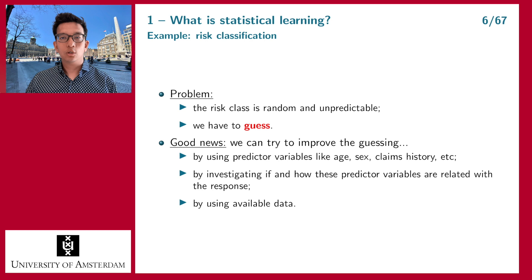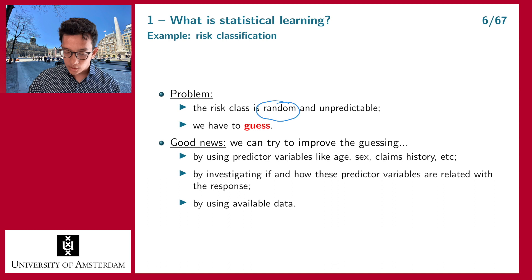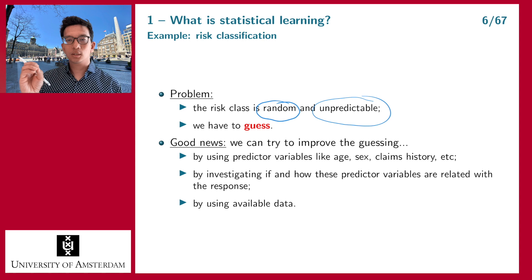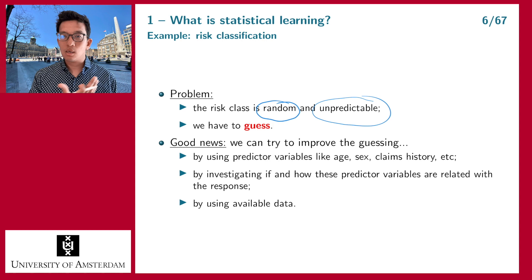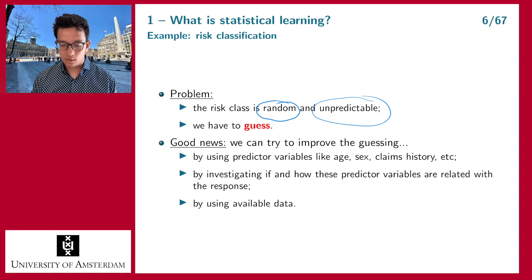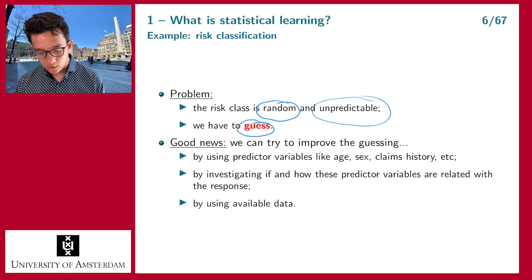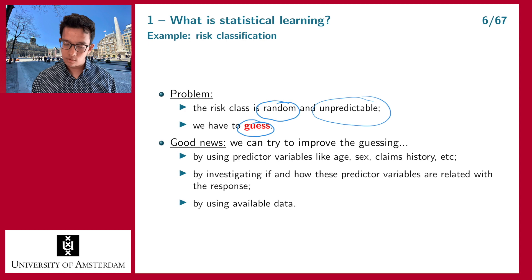The problem is that the risk class of a policyholder is random and therefore unpredictable. You can use all your tools and find that a policyholder should be classified as a good driver, but you know there is still a possibility that it is actually a bad driver. There is always the possibility that you misclassify your observation. In that sense, you are always guessing the solution — it's not that you know the risk class, you are guessing it.